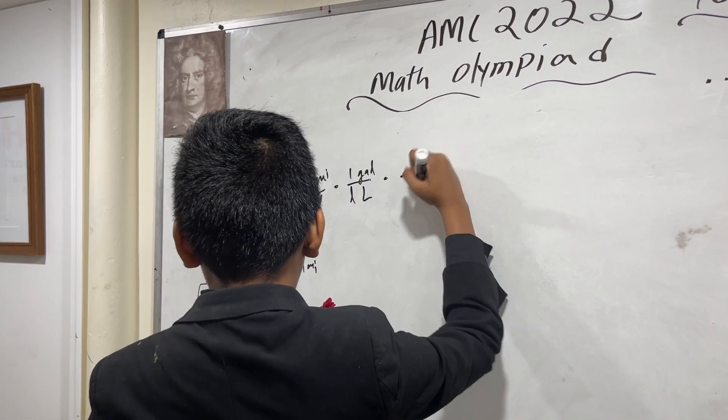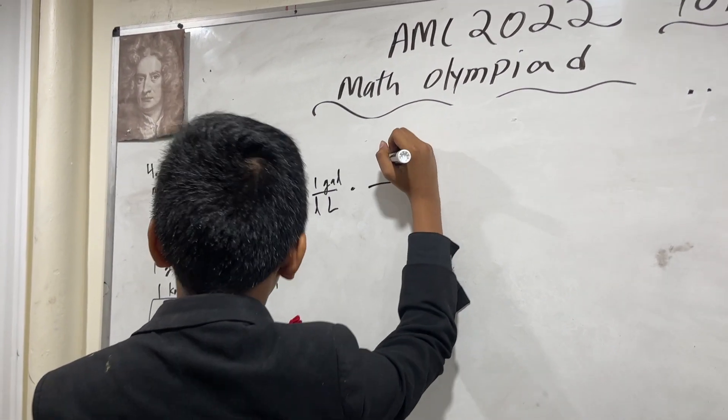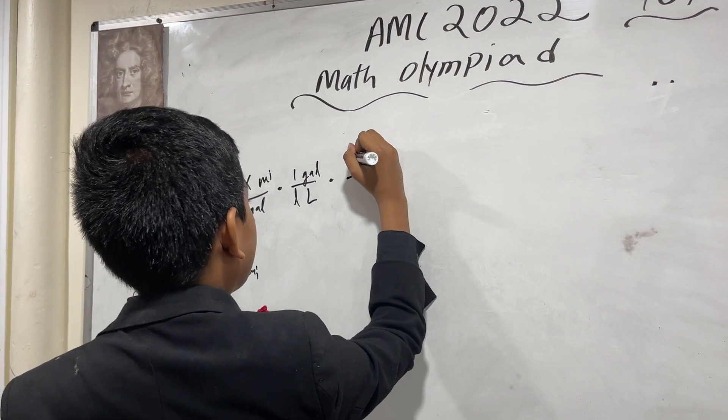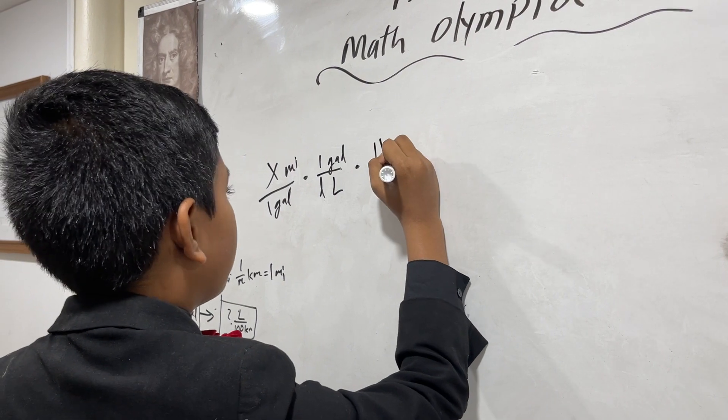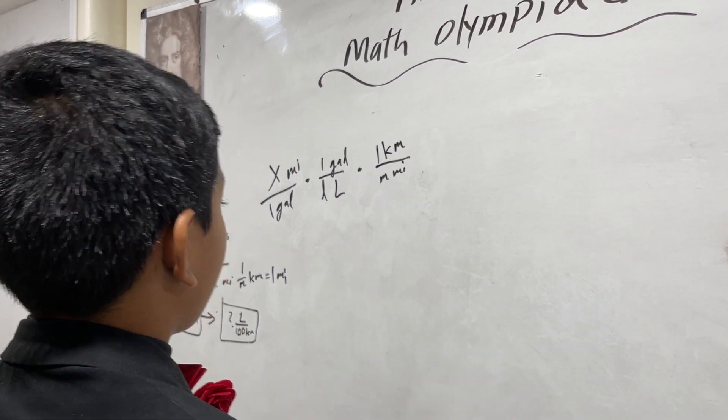So, let's have that do that. Or, we could just have it this way. 1 km over M miles. We could just do it that way as well.